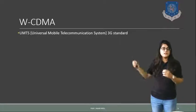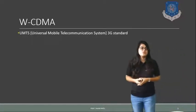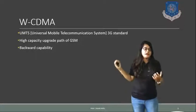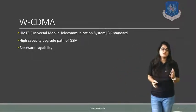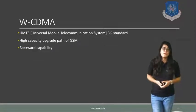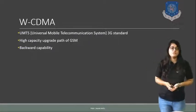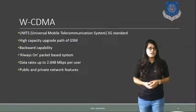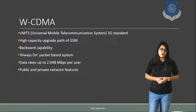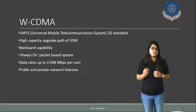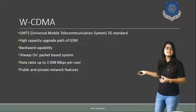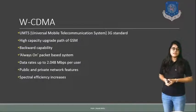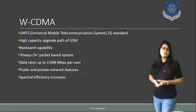Let us see first the WCDMA technique. WCDMA is basically the UMTS standard — Universal Mobile Telecommunication System. It provides high capacity migration path of GSM and also provides backward capability with the 2.5G standards, that is IS-95 and IS-95B. It is an always-on type packet-based system, and the data rate provided by WCDMA is 2.048 Mbps per user, which is much more than the previous 2nd generation standard. It also provides public as well as private data networks, and spectrum efficiency always increases with better channel utilization.